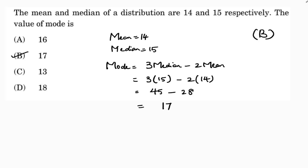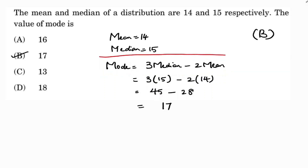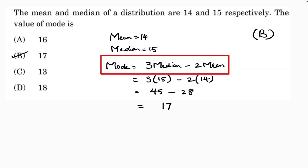Using the empirical relation Mode = 3·Median − 2·Mean, we can find the value of mode, which is 17.